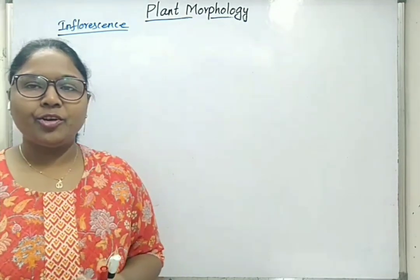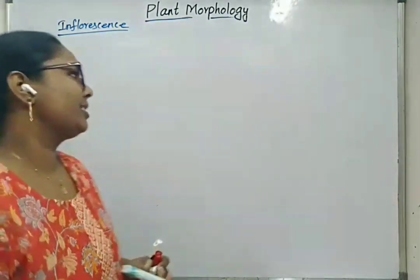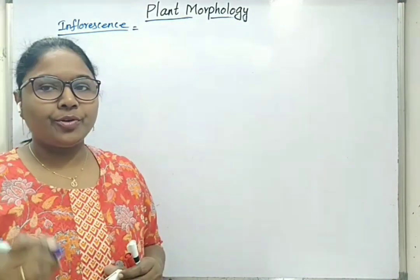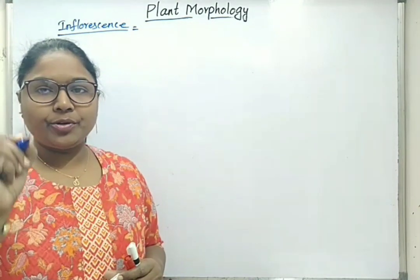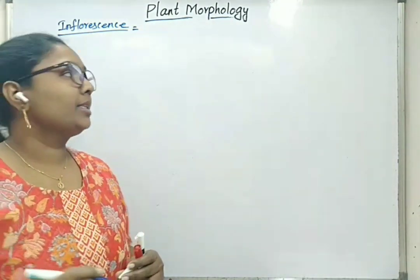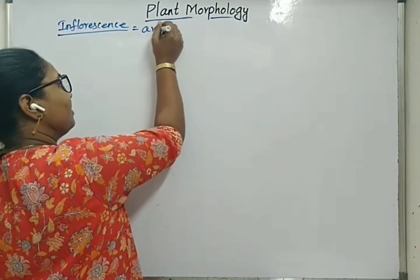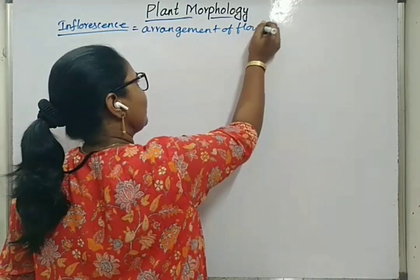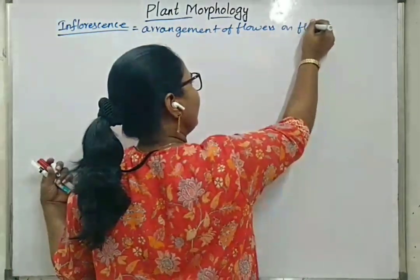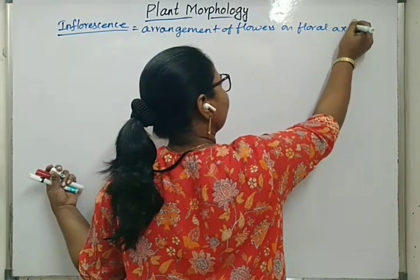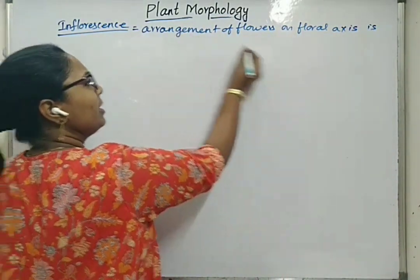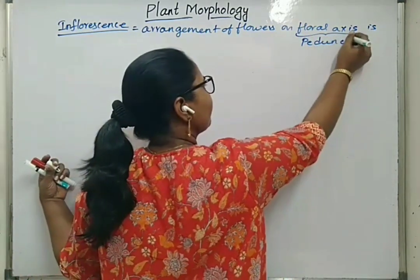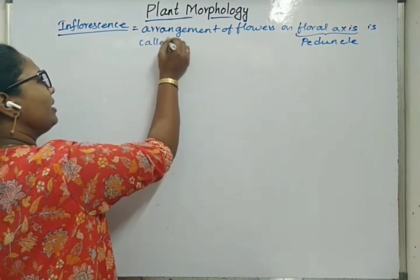Hello students, now we will learn about inflorescence and its types. Inflorescence means the arrangement of flowers or florets on the main floral axis. The floral axis is given the term peduncle.